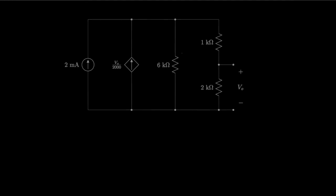Finally, let's look at a circuit that has three resistors, a 2-milliamp current source, and a dependent current source whose current is proportional to the voltage across the 2-kilohm resistor. Let's use the principles we've learned to solve for the voltage across the 2-kilohm resistor, labeled V0.